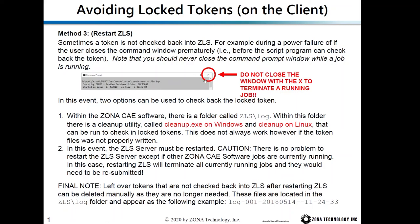Once you have a lock token problem, you can go into the ZLS lock folder. There is a program called cleanup.exe on Windows and cleanup on Linux — run this and it will release the lock token. If everything fails and you still cannot release the token, you can restart the server. Once you restart the server, it will release all lock tokens.